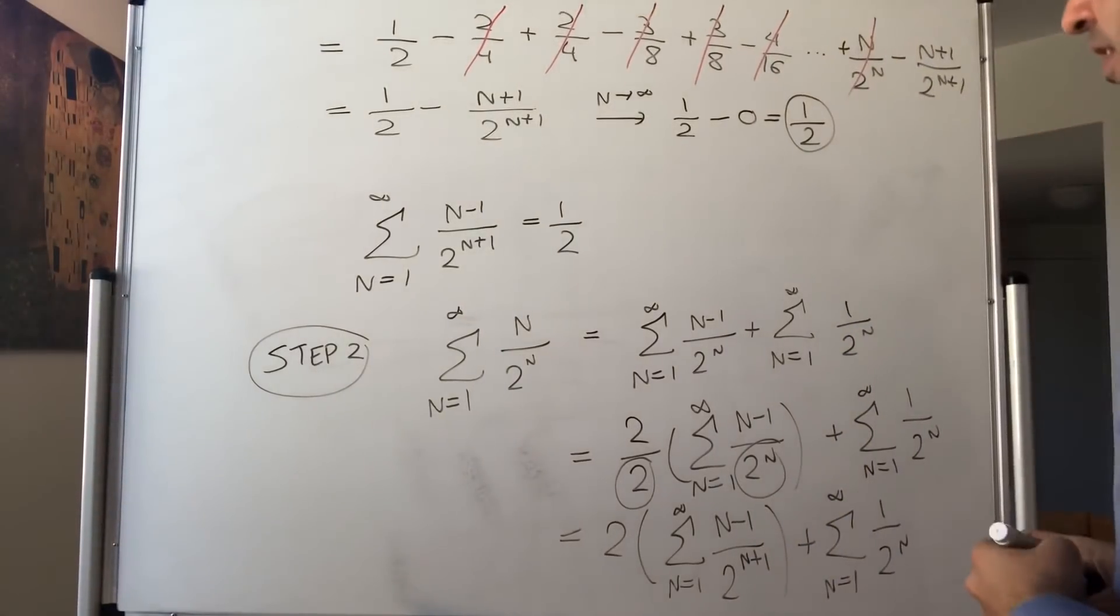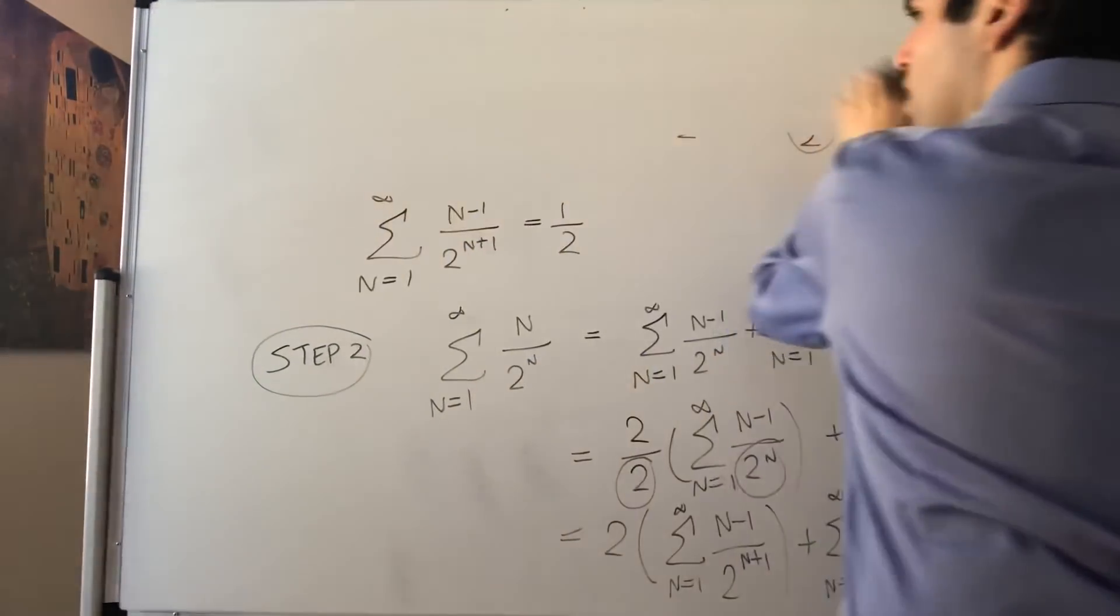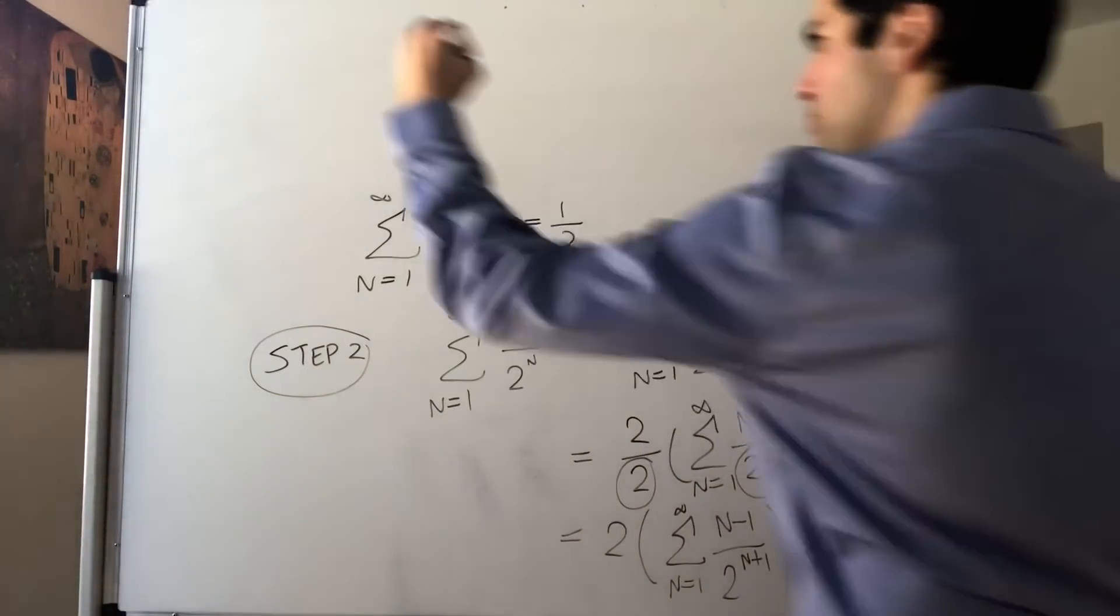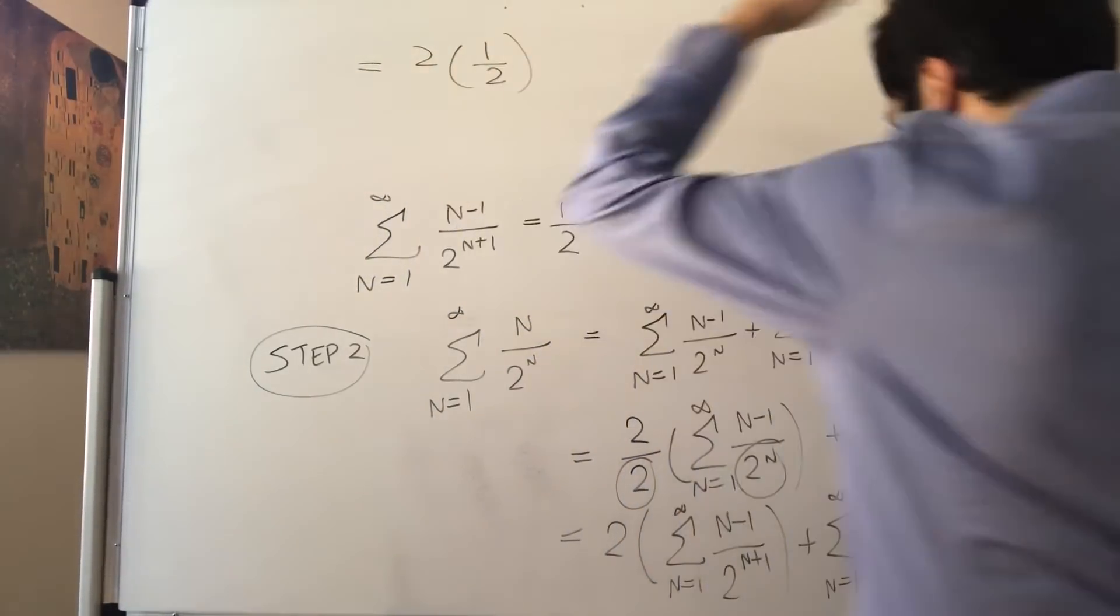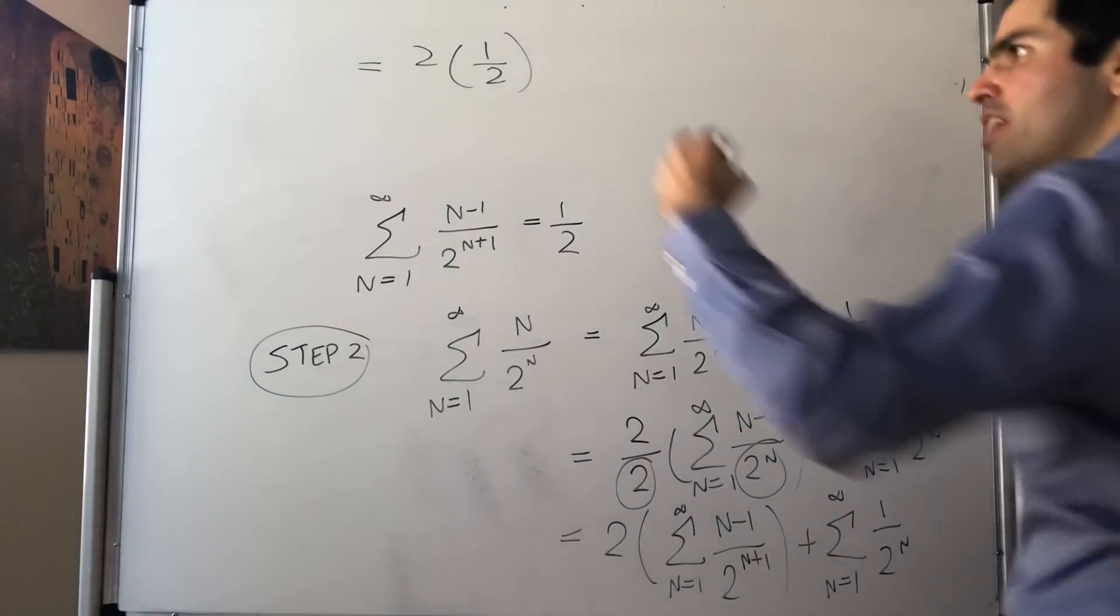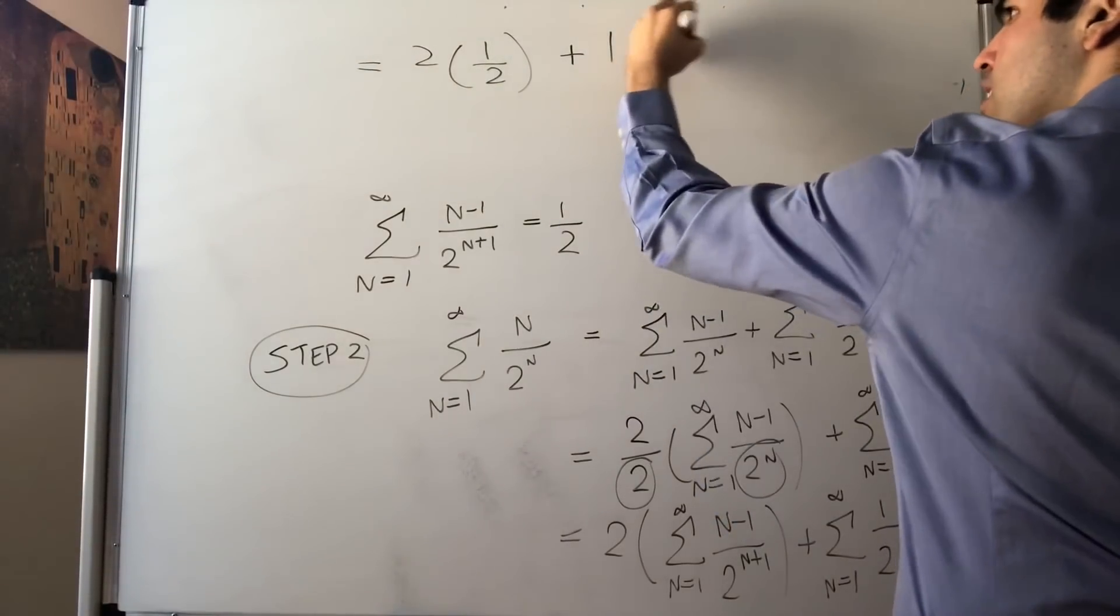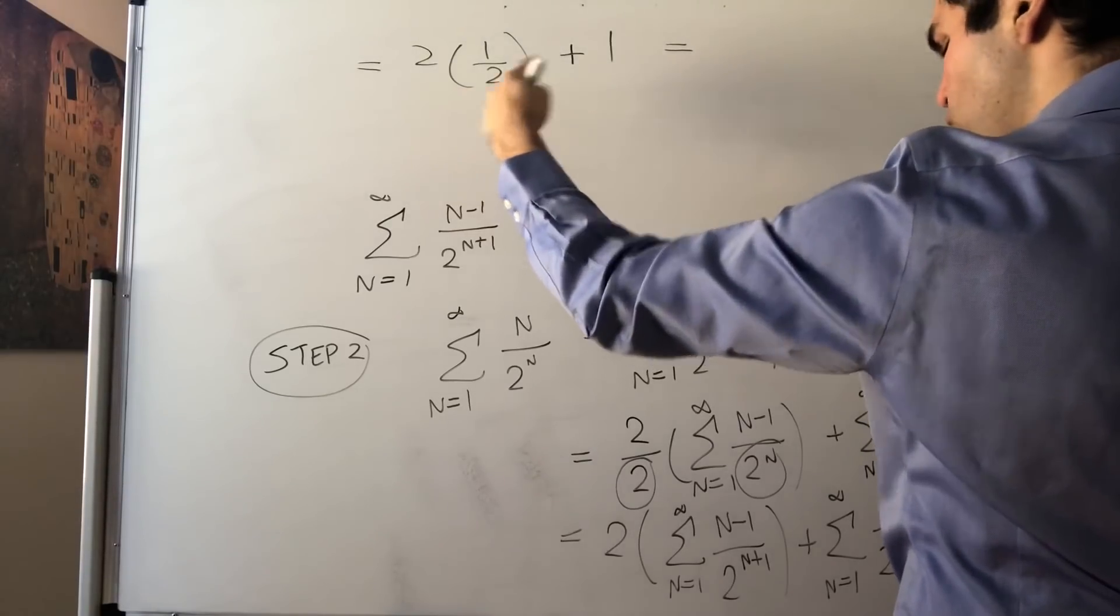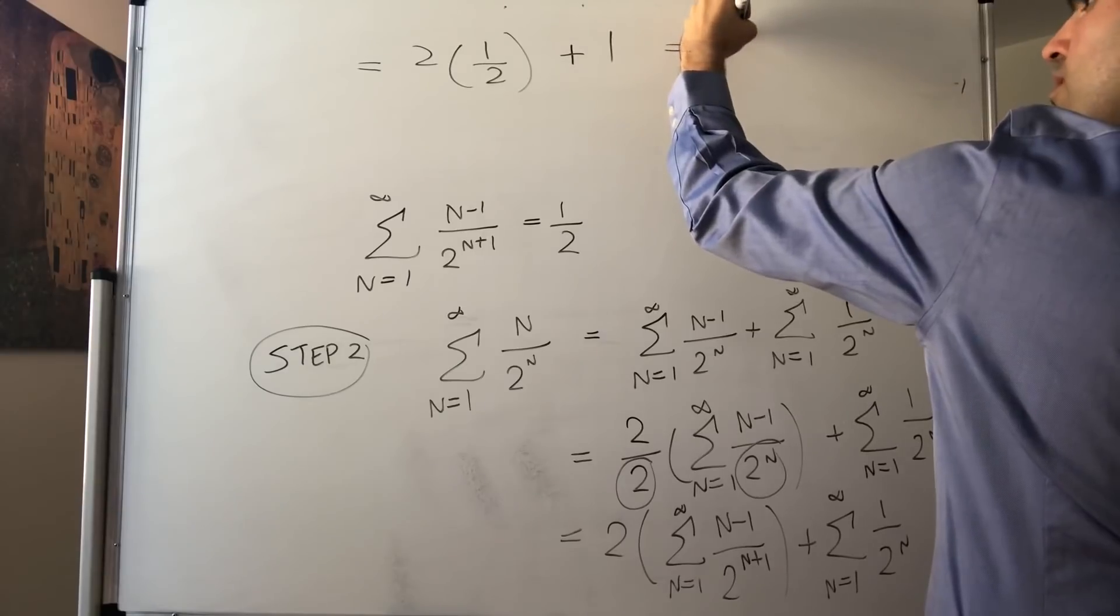All right, but then what do we have? Well, we just calculated that sum to be 1 half. So 2 times 1 half. And this is just a geometric series, 1 half plus 1 quarter plus 1 eighth, etc., which just sums to 1. And then what you're left with is simply 2 times 1 half plus 1, which is, well, 2.